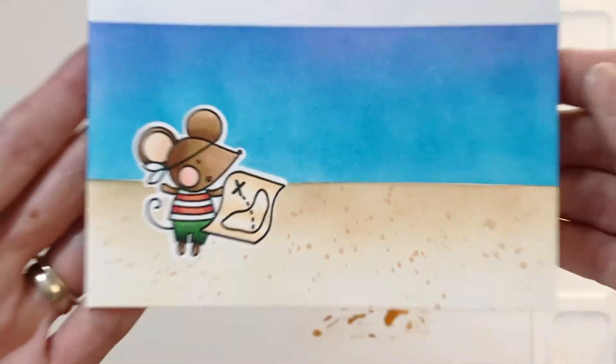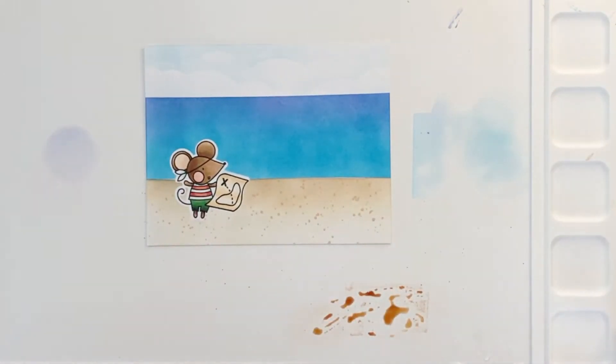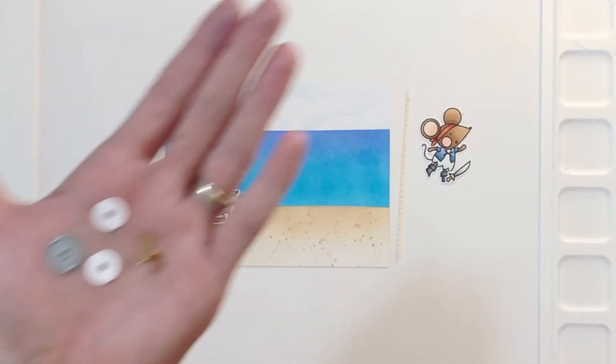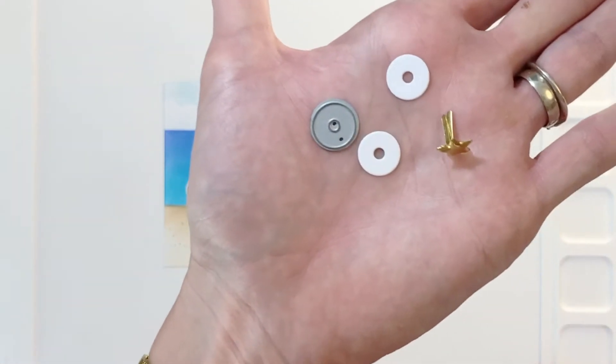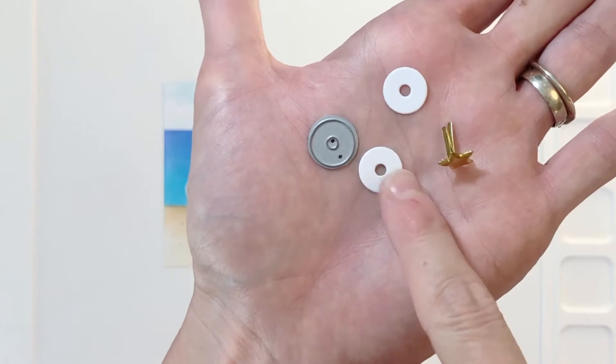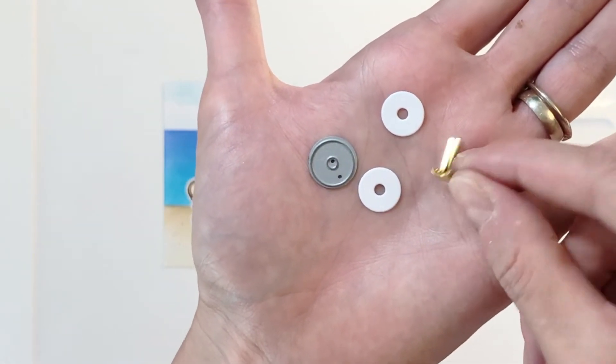Now it's time to start working on creating the swinging pirate. The swinging mechanism is actually pretty easy to create. You need two of these donut pieces. I use the tag hole reinforcer die to create them and then you'll need a brad.